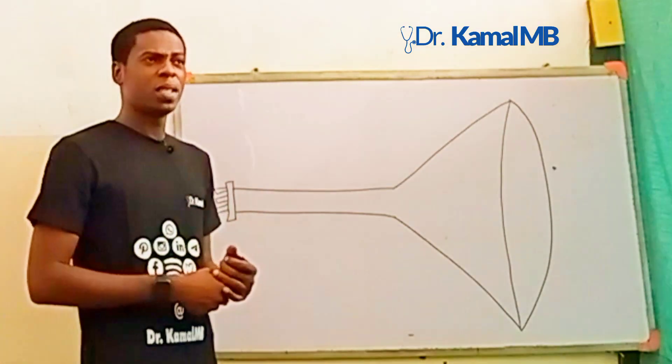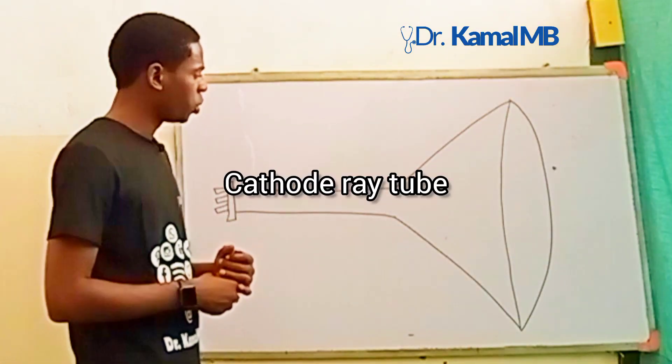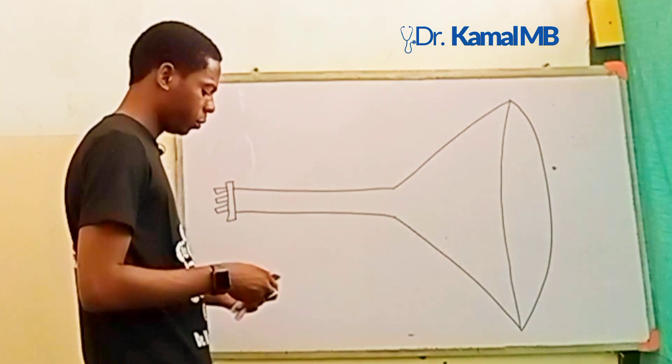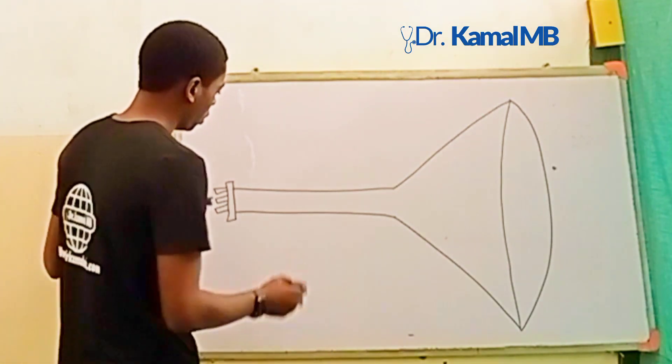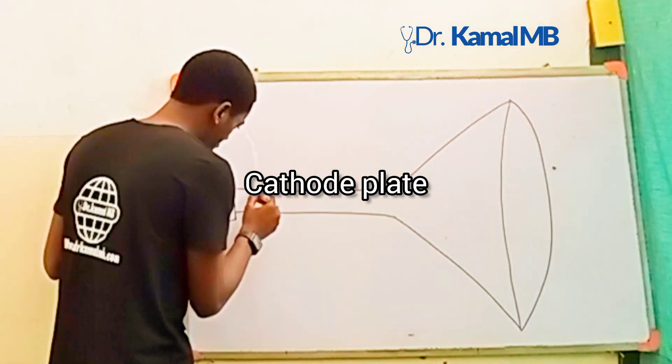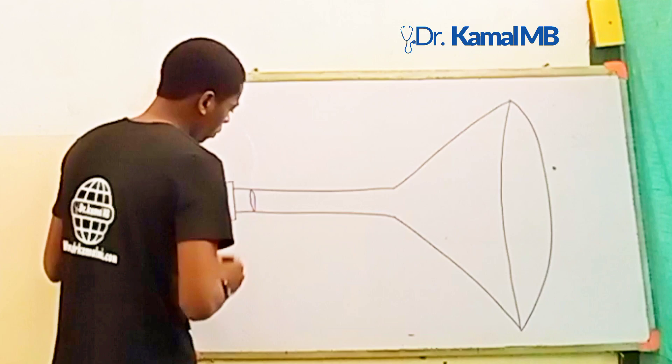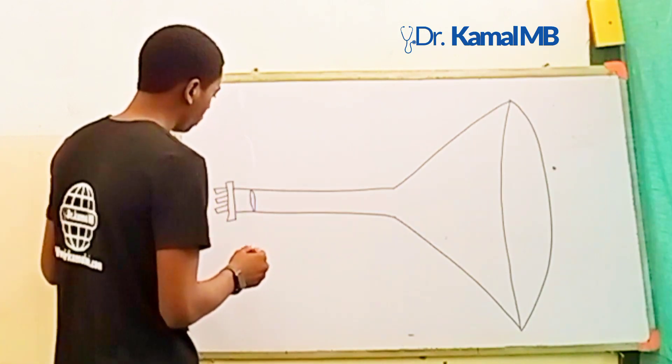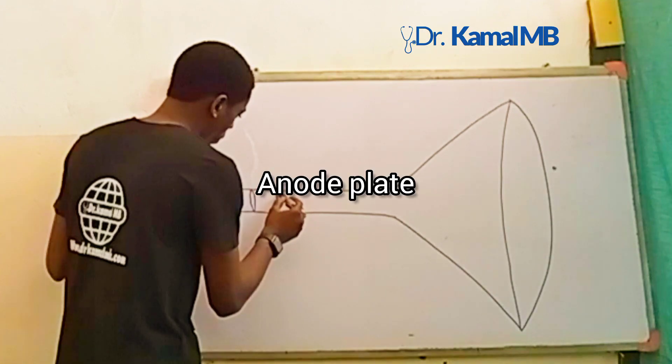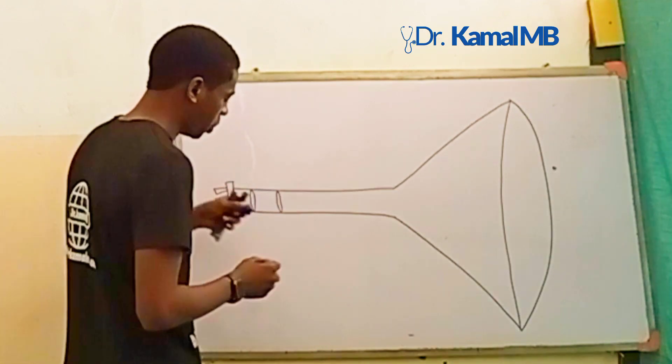J.J. Thompson uses a tube called the cathode ray tube like this, and he inserted a cathode plate which is negatively charged and an anode plate which is positively charged.